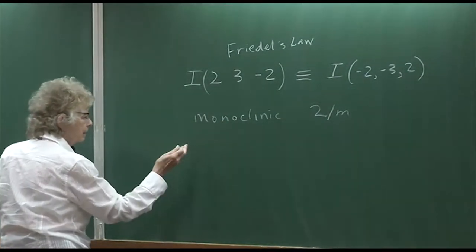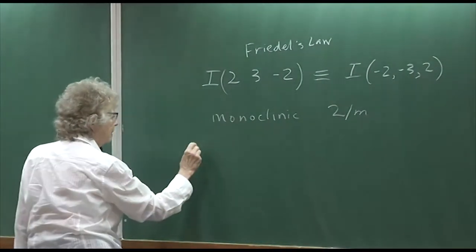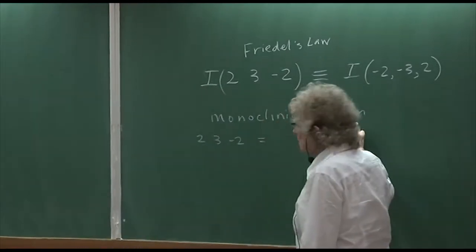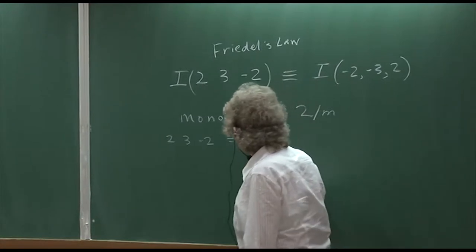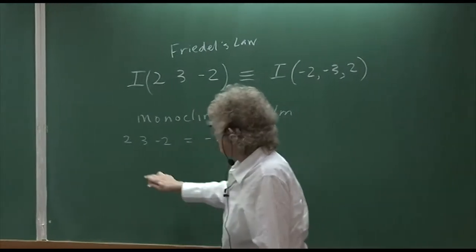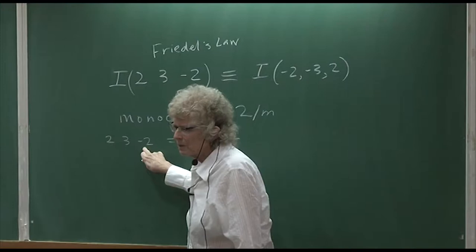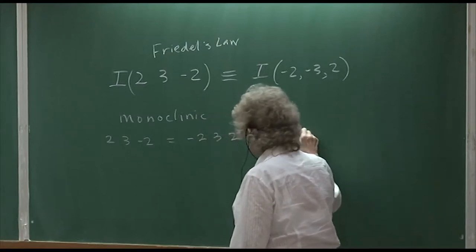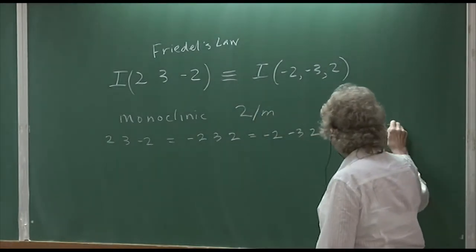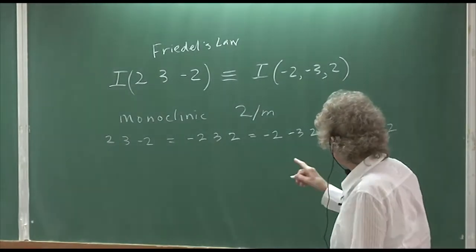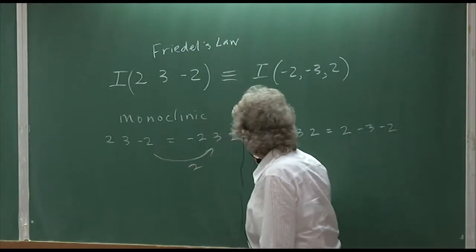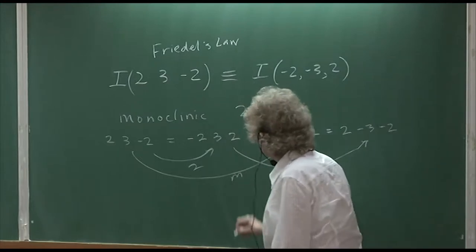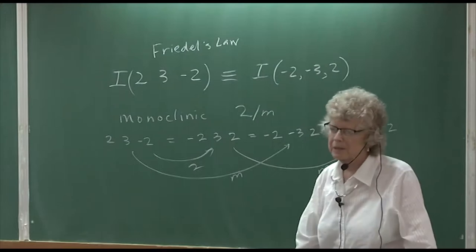The Laue group for monoclinic, assuming Friedel's law is obeyed, is 2/m. That means if you have HKL 2, 3, minus 2, it equals minus 2, 3, 2 by the two-fold, and then applying the mirror gives minus 2, minus 3, 2, which equals 2, minus 3, minus 2. Those four different reflections have 2/m symmetry — that's the Laue symmetry. However, if it's a chiral space group like just 2, you would only have the first two equivalents.